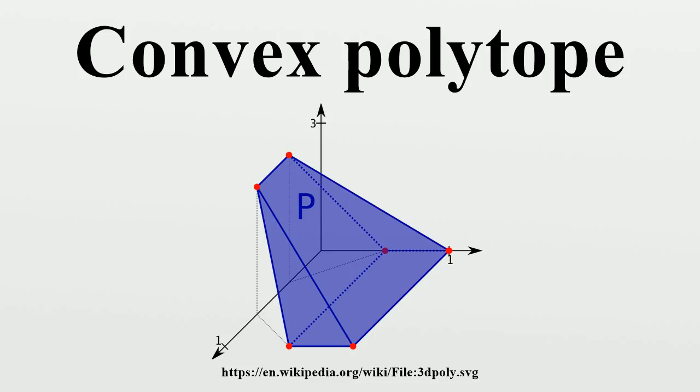The face lattice: A face of a convex polytope is any intersection of the polytope with a half-space such that none of the interior points of the polytope lie on the boundary of the half-space. If a polytope is d-dimensional: